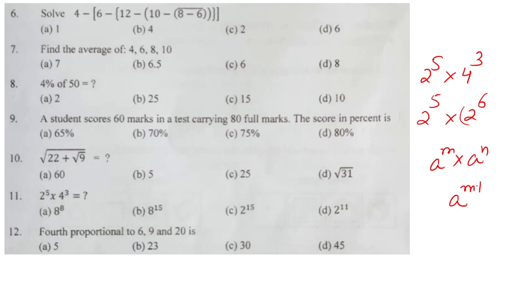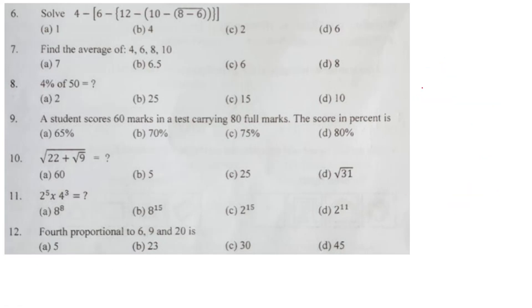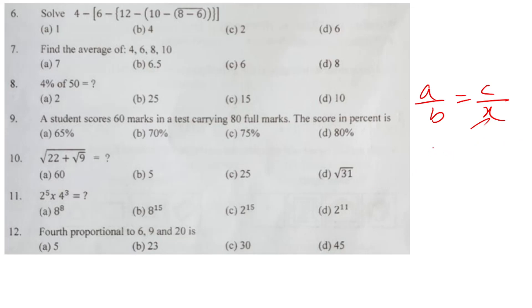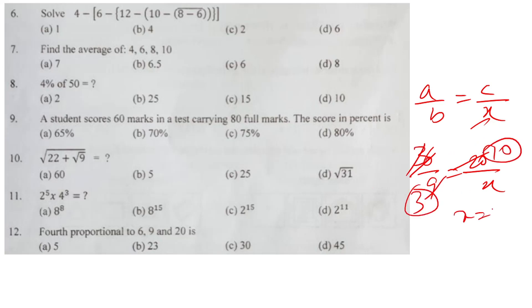4 plus 5 plus 6 equals 11, so 2 raised to the power 11. For the 4th proportion: A by B equals C by X. Six by nine equals twenty by X — cancel, three times, three multiplied by ten equals thirty. Thirty is the correct answer.